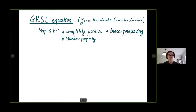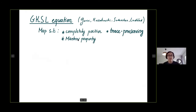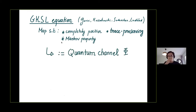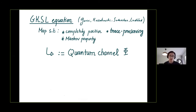There is a very nice general formulation of this kind of evolution given by the GKSL equation — standing for Gorini, Kossakowski, Sudarshan, and Lindblad — sometimes abbreviated as just the Lindblad equation. It is a general way of describing a quantum map that fulfills three properties: complete positivity, which is slightly more general than positivity; trace preservation for your density matrix; and the Markov property. If you have all three things, you have what is called a quantum channel, which is a generalization of the unitary operation described by the Schrödinger equation to more general quantum operations.